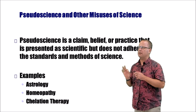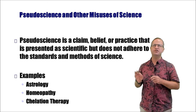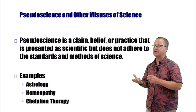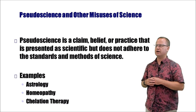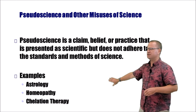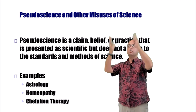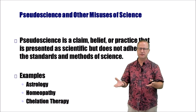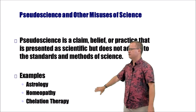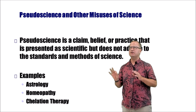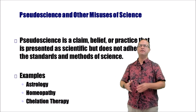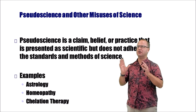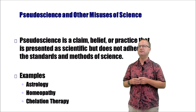Now let's talk about pseudoscience and other misuses of science. Pseudo means false — so pseudoscience is false science: a claim or belief or practice presented as scientific but not actually adhering to the standards or methods of science. Examples include astrology, homeopathy, and chelation therapy. If you go to Wikipedia and search for pseudoscience, you'll find a very large list — and you'll probably find some things you thought were scientific that are actually pseudoscience.